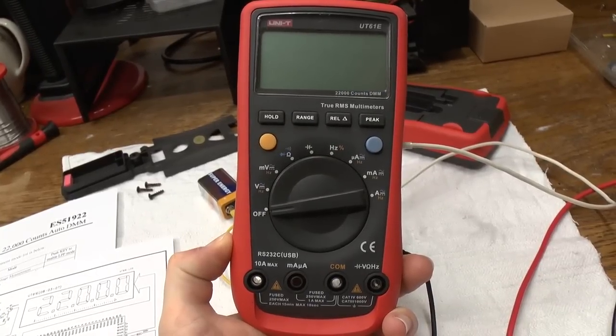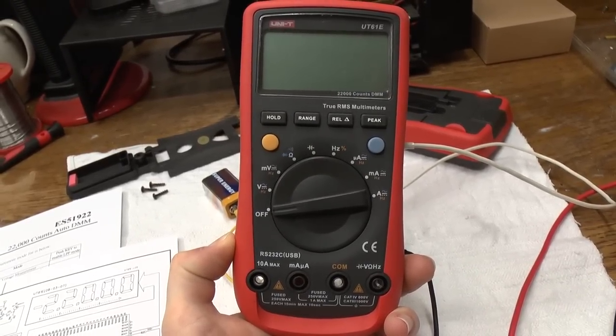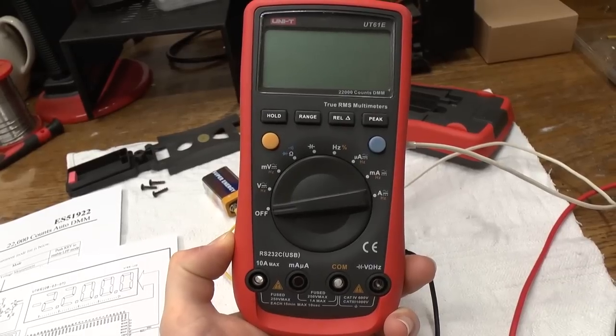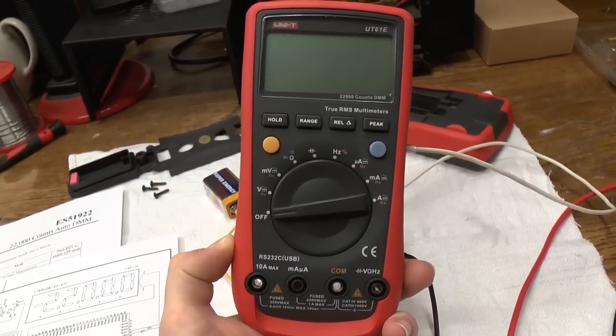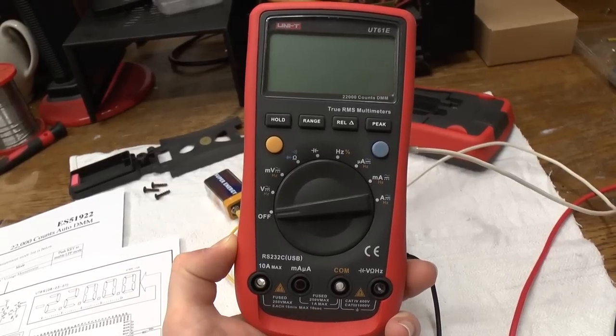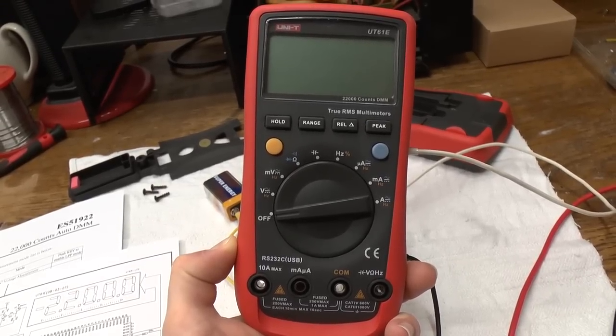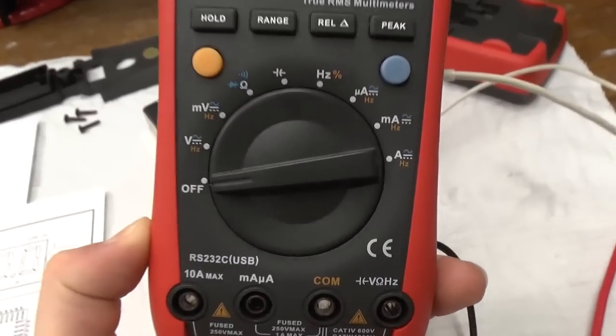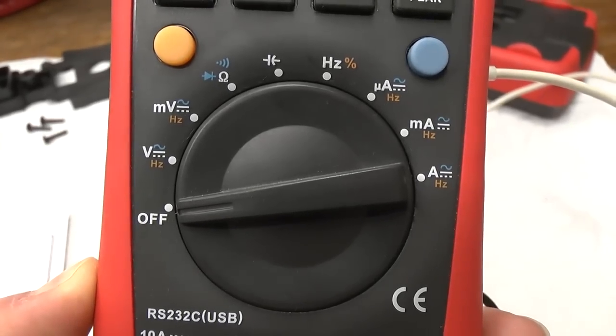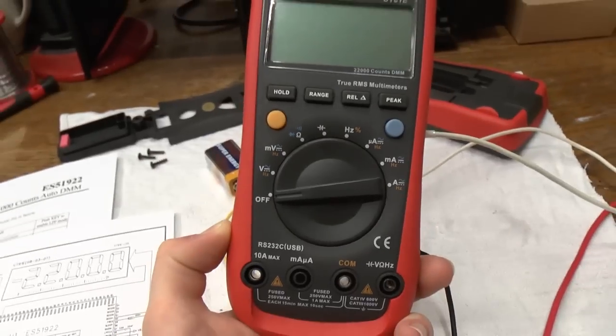We're back again with the Uni-T model UT61E multimeter and its strange fault. The video I first uploaded about this certainly generated some response. A lot of people said that the selector switch was at fault.